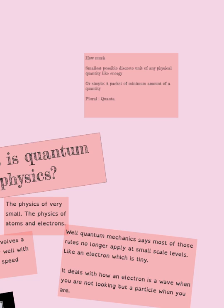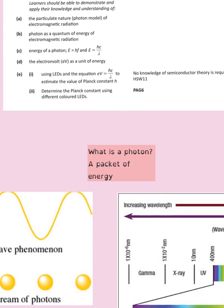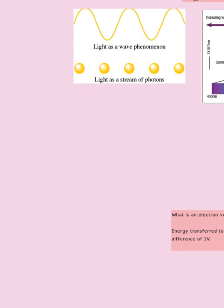In simple terms, quantum means a packet of something — in this case, a photon is a packet of energy. The learning outcome also says photon as a quantum of energy of electromagnetic radiation. The other outcome you should come out with is knowing the energy of the photon, how we can calculate it, what those symbols mean, and also how we can complete an experiment to calculate certain values. Each photon is a packet of discrete energy.